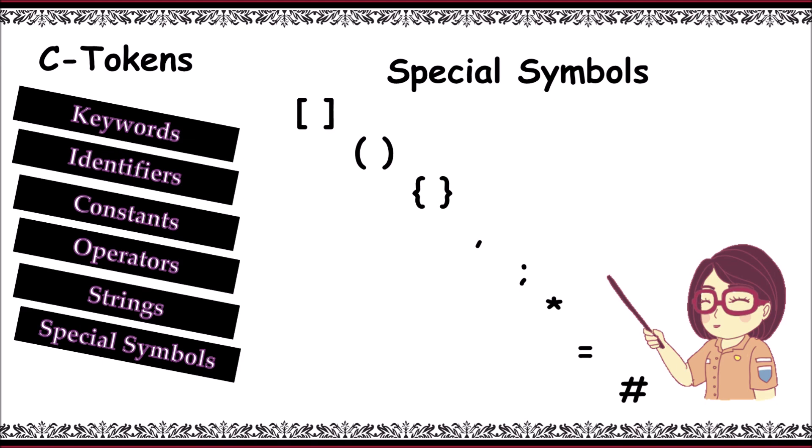Finally, special symbols. Special symbols are used in C with some special meaning and cannot be used for any other purpose. For example, special symbols include square brackets, rounded brackets, braces, comma, semicolon, asterisk, equal to, and hash. Thanks for watching!